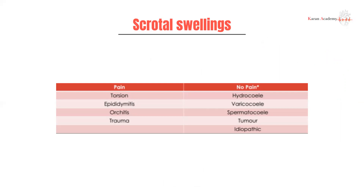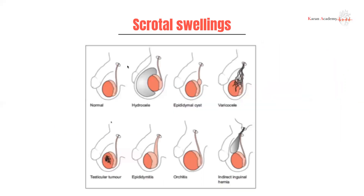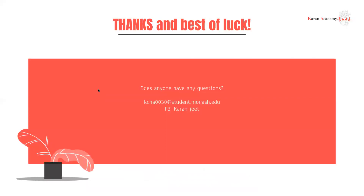We started this lecture by talking about having a differential list for scrotal swellings. Here's a really good one based on painful versus painless: torsion, infections, and trauma are all going to be painful, while hydroceles, varicoceles, cysts in general, and tumors tend to be painless. And here's a graphical representation of those different causes. Thank you all for coming in. As always, if you have any questions, send me an email or add me on Facebook. Please look after yourself and your loved ones.